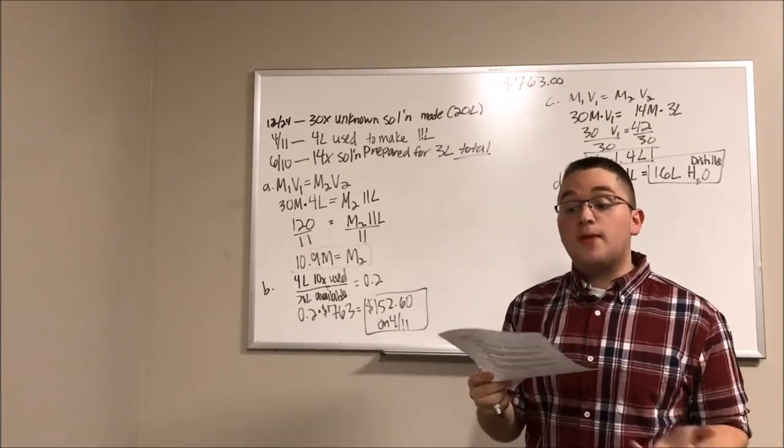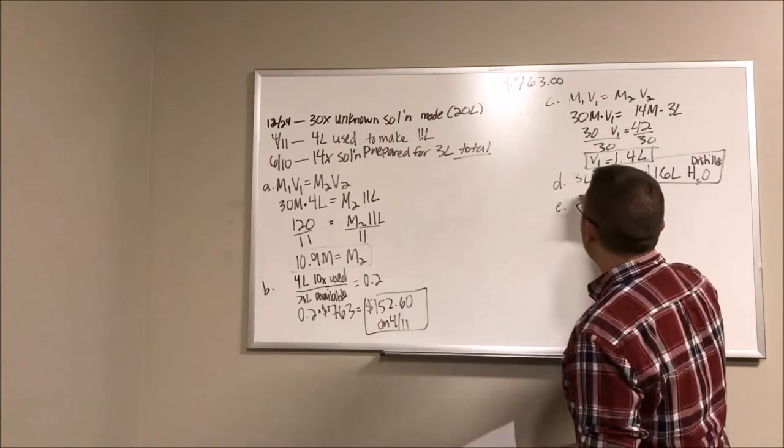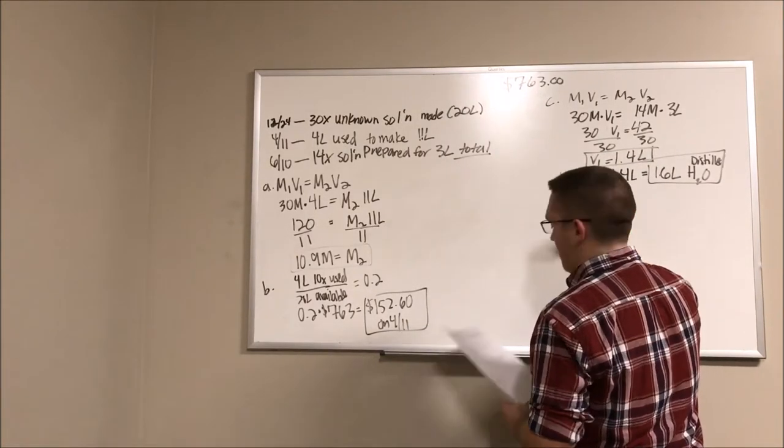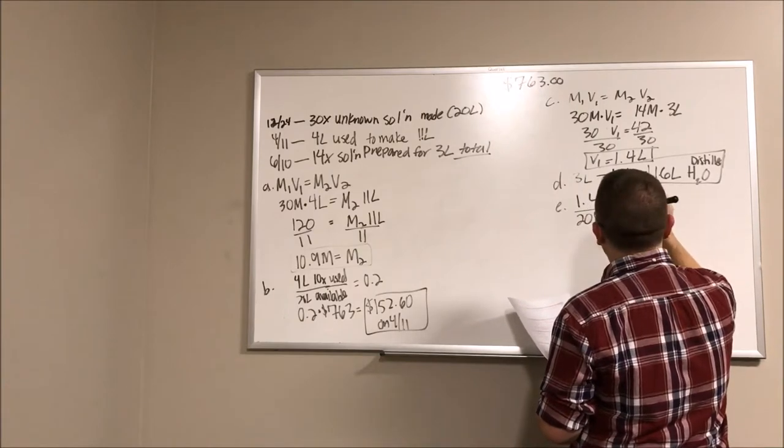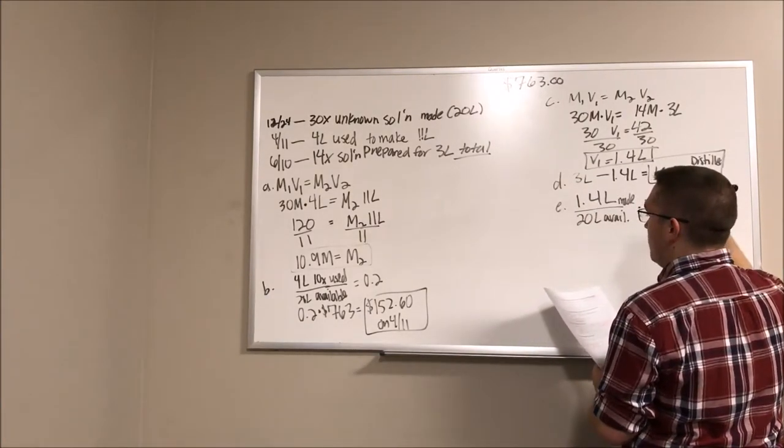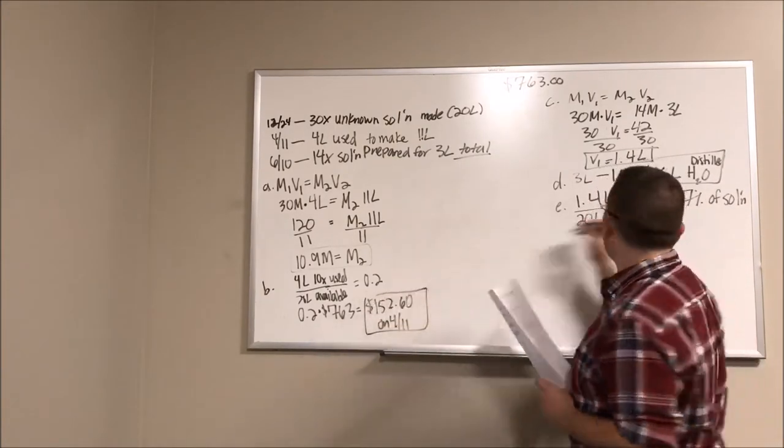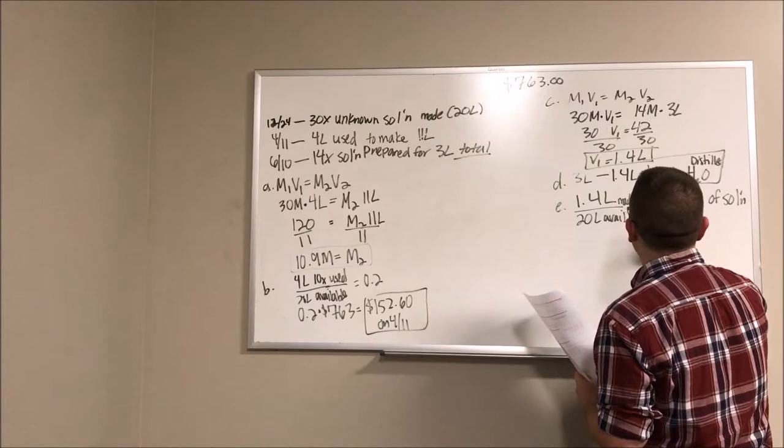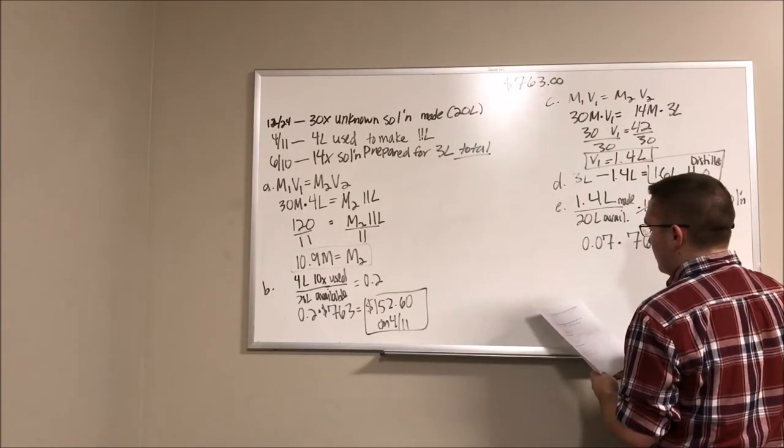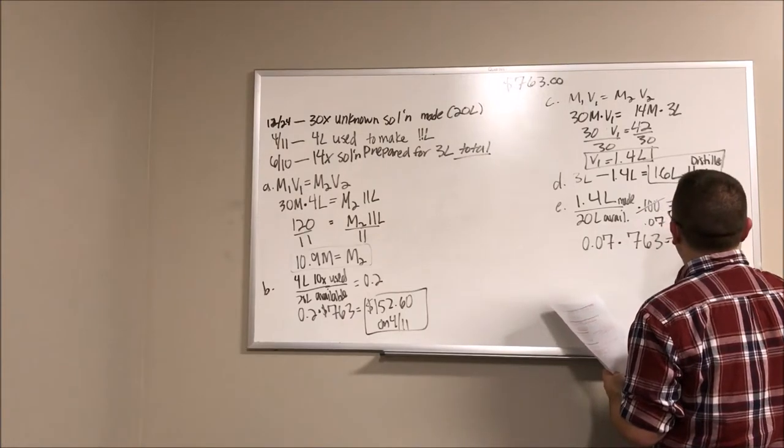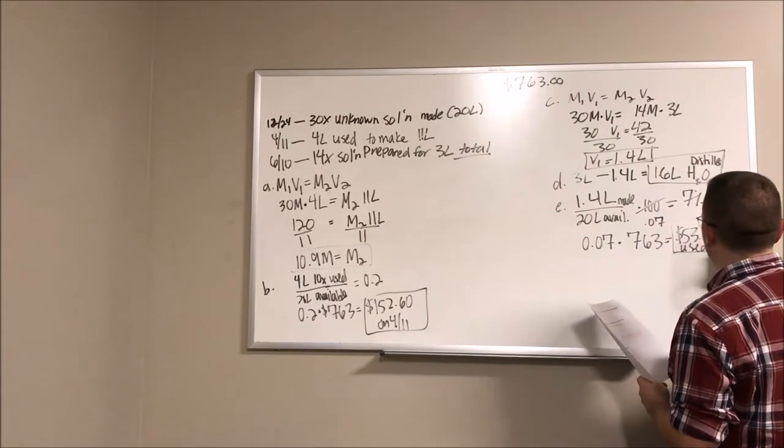All right, number five, what was the cost of the buffer created on June 10, 2017? And assume water is free, of course. So what we're going to do here again is know that we used 1.4 liters divided by 20 liters available times 100 to show us that we used 7% of the solution. Or you can just get 0.07 and go from there. So 0.07 times $763 will tell us that we utilized $53.41 worth of solution on June 10. Perfect.